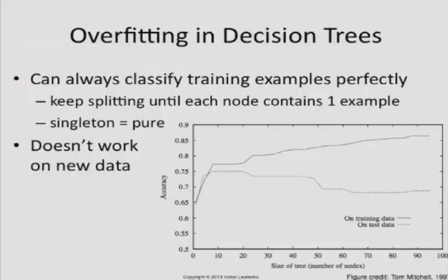Now you know the entire algorithm. Let's talk about the specifics, the details. One interesting thing about decision trees is it's a recursive algorithm. What it will do is it will keep splitting the data until it ends up with pure sets.